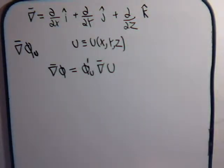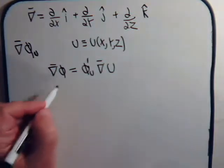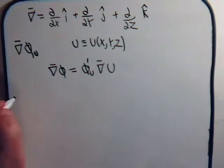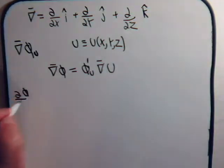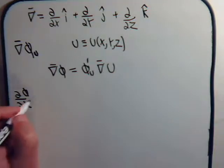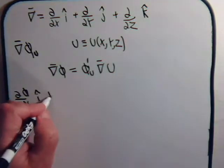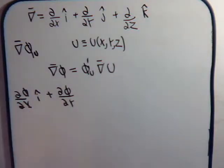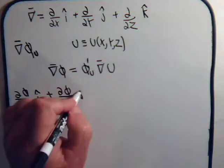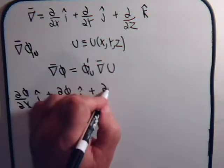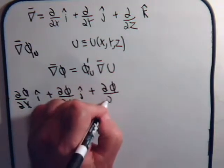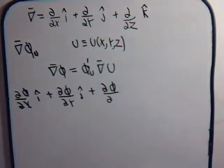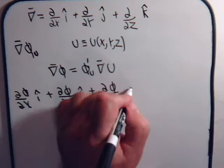Let's go ahead and prove this relation. Using our definition, the gradient of phi is the partial of phi with respect to x times i, plus the partial of phi with respect to y times j, plus the partial of phi with respect to z times k.